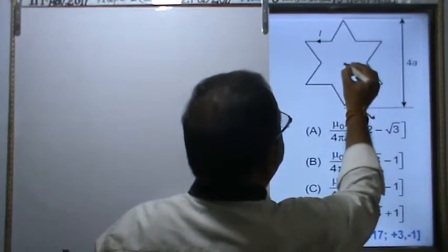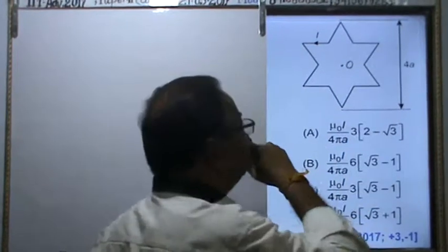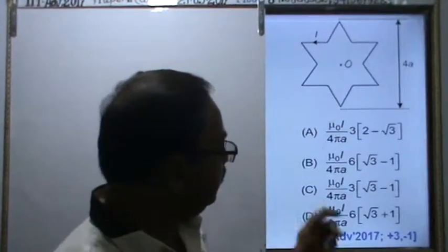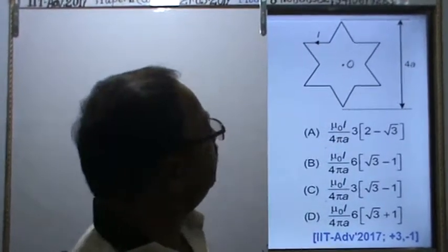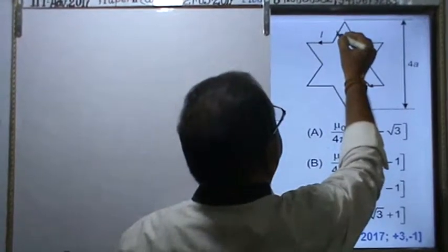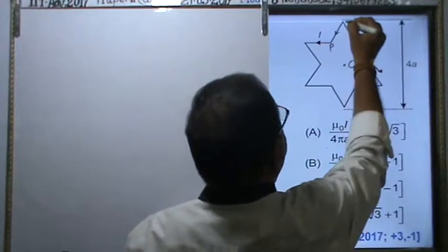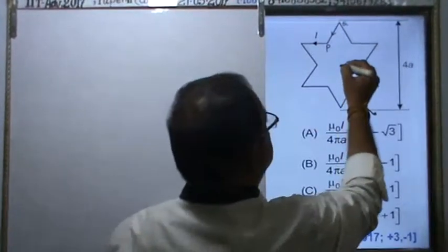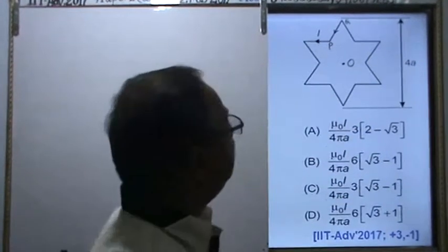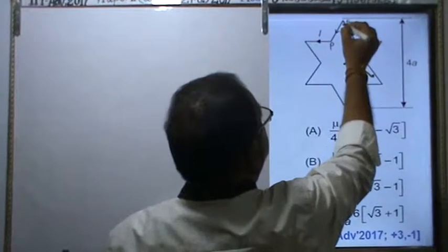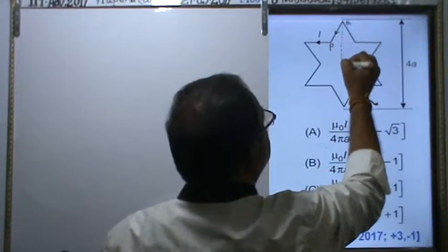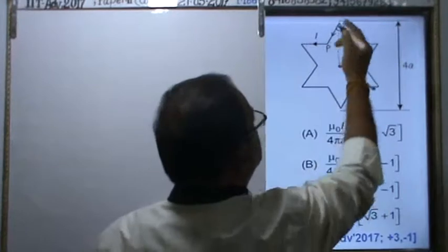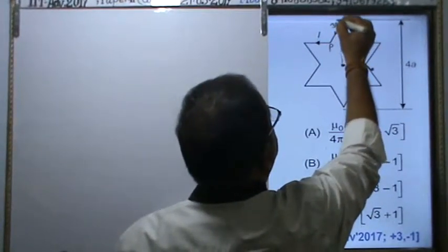This is the center, which we denote as O. We need to find the magnetic field at point O. If we consider this wire from P to Q, and join this point to the center, the angle that forms - since there are six arms - this angle will be 30 degrees.